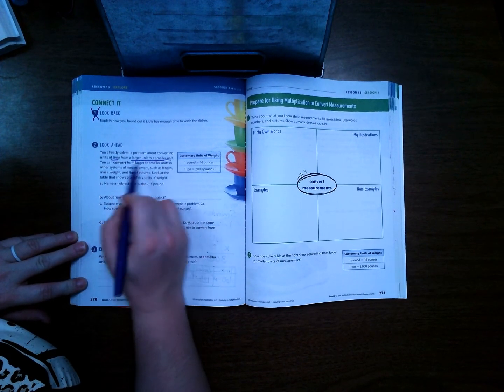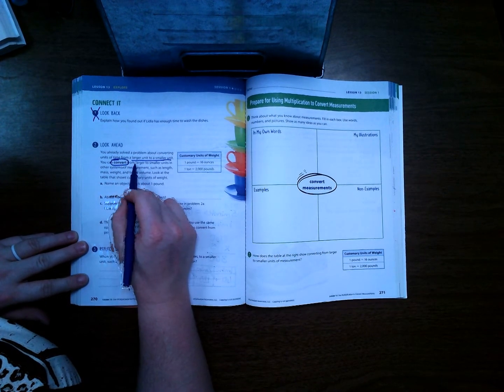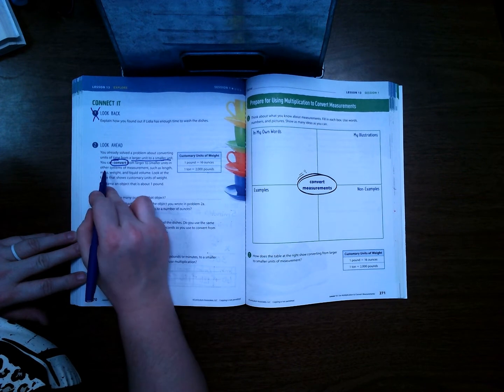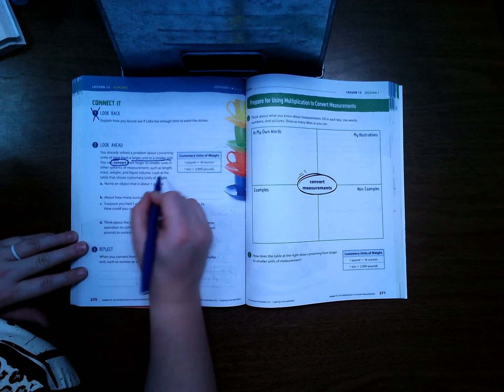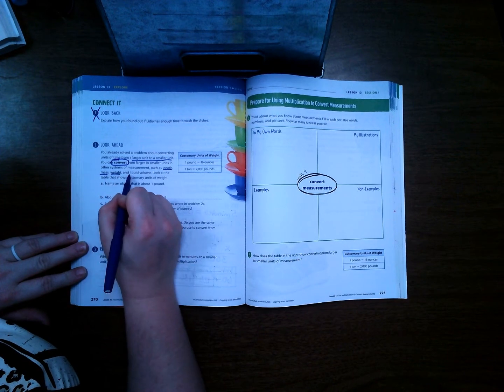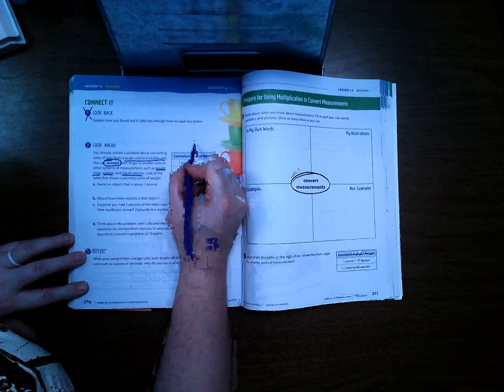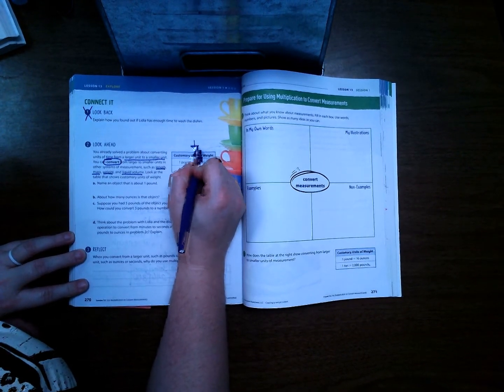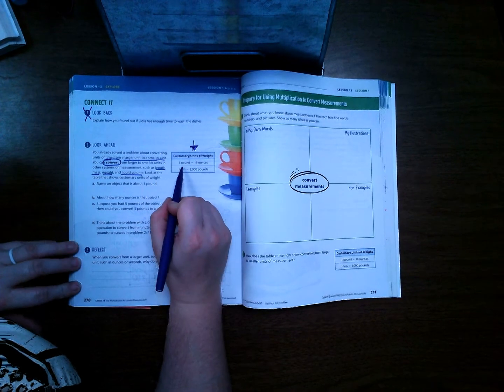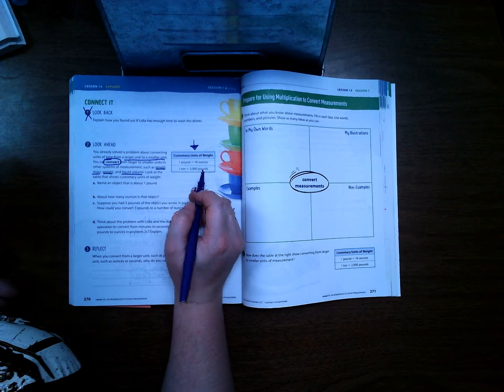Look ahead. You already solved a problem about converting units of time from a larger unit to a smaller unit. You can convert from larger to smaller units and other systems of measurement such as length, mass, weight, and liquid volume. Look at the table that shows customary units of weight. So right here it's giving us a table with customary units of weight. It's telling us that one pound has 16 ounces and one ton has 2,000 pounds.